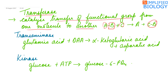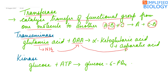An example of transferase is the transaminase enzyme, which catalyzes the transfer of an amino group. For instance, glutamic acid reacts with oxaloacetic acid — the amino group of glutamic acid is transferred to oxaloacetic acid, converting it into aspartic acid, while glutamic acid forms alpha-ketoglutaric acid.